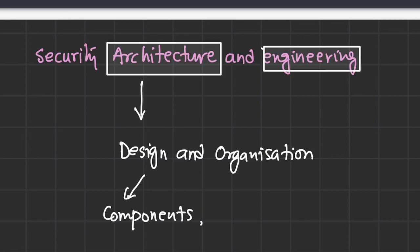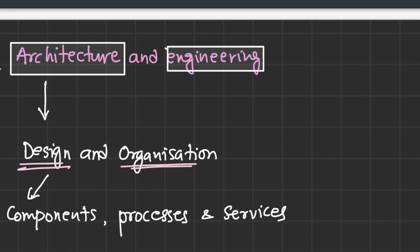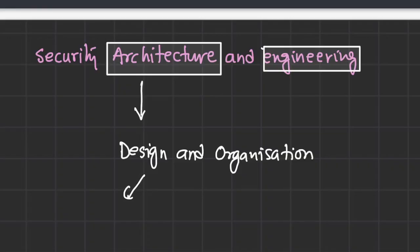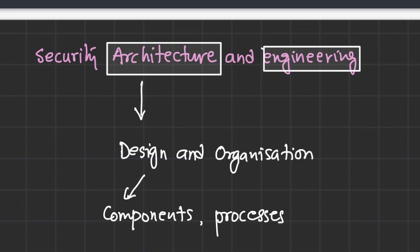When we talk about security architecture we discuss components, processes, and services. Engineering, on the other hand, is basically the implementation part of the security architecture. Designing comes first — we make a blueprint which is the architecture — and then we implement those components, processes, and services using a standard methodology, which is the engineering methodology. This is what we will cover in Domain 3.